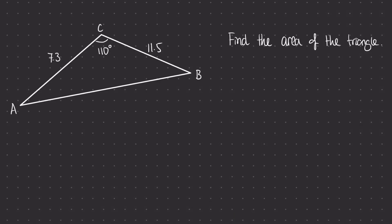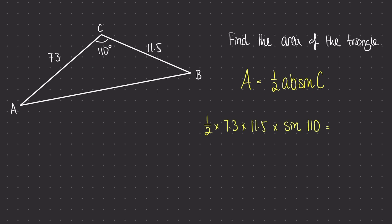Let's utilise the area rule for finding the area of this triangle. In this example we can see that we have a side length, an angle, and then another side length, creating this sort of side-angle-side sandwich that we talked about during the cosine rule video. Now that we've spotted that and we're asked to find the area, we know that we can just write down the rule: the area is a half a b sine of C. Placing all of this into our calculator, we find that the answer is 39.4. Working out the area of a non-right-angled triangle is very simple if we have two side lengths with the angle between them.